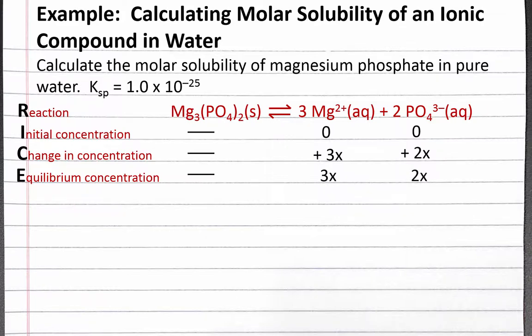At equilibrium, we'll have 3 moles of magnesium ions and 2 moles of phosphate ions for every mole of solid magnesium phosphate that was dissolved.